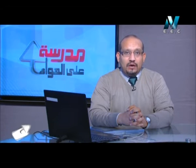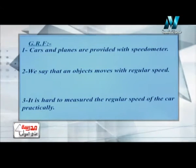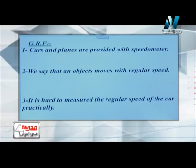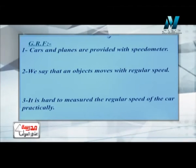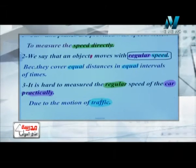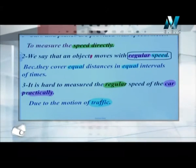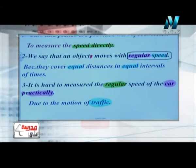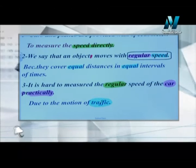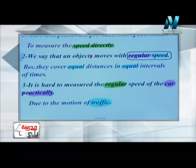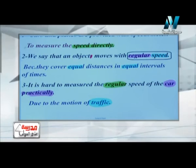Let's start with the first question in the curriculum: the speedometer. As you can see on the monitor, cars and planes are provided with speedometers because we have other objects that can move around us, so our speed or our motion changes from one time to another.